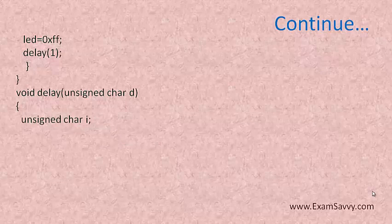Here for rotating a loop, I have taken one more variable that is unsigned character i. And I am using a for loop. Here I am not doing anything in first variable. And second statement is d greater than 0.